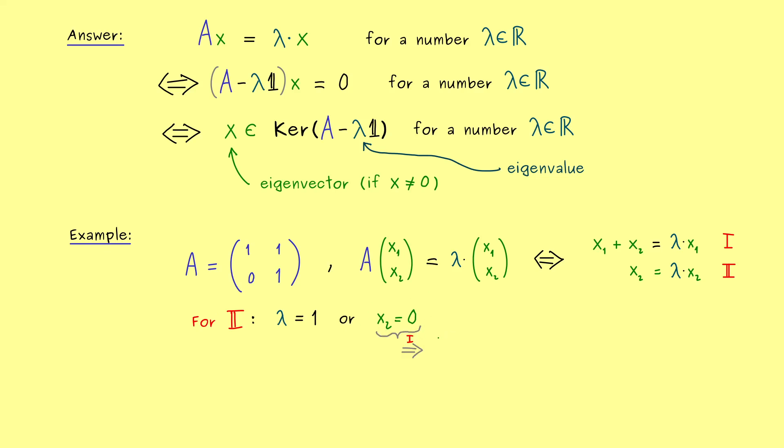In fact, in the second case here, the first equation would say that x_1 is equal to lambda times x_1. So also there, as before, we get two possibilities. So either lambda is equal to 1, or the first component vanishes. But now we see, in the second case here, we would have that both components are equal to 0. In other words, we would get out the zero vector, which is not interesting at all to answer our eigenvalue equation.